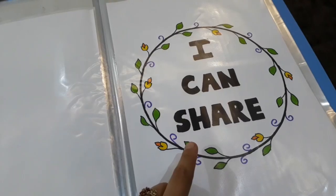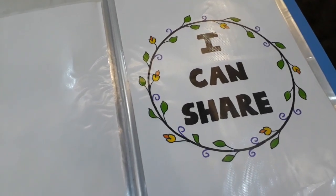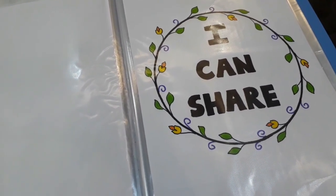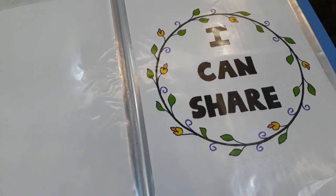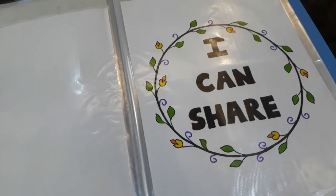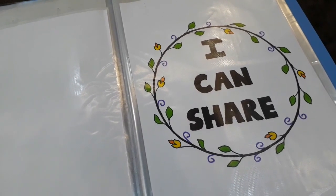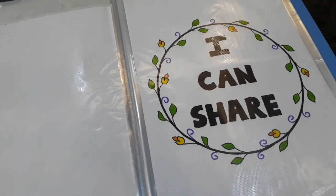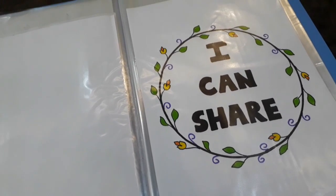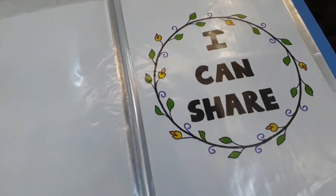Now, whatever skill you want your child to learn, make it the title of the story, but always keep the title short and simple. For example, I am going to teach the skill of sharing, so I made the title 'I Can Share'.